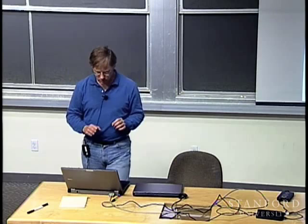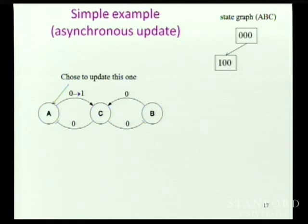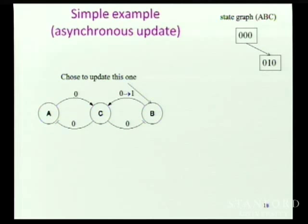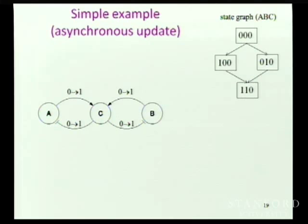Here's a simple example of how asynchronous works with the same fake circuit shown earlier. In the first state, A and B are both unstable and want to change. Instead of both changing at the same time as in the synchronous model, we can go to the 100 state if A changes first, or to the 010 state if B changes first. We enumerate all these possibilities, building a state machine that has branching in it. Because we can build the entire finite state machine, we can exhaustively analyze every possible behavior.